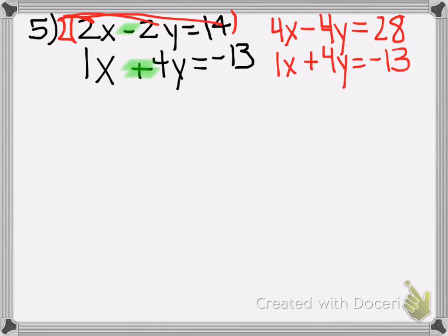So since those are all there, now you have equal coefficients, 4 and 4, with opposite signs, plus and minus on the y. So the y will cancel.